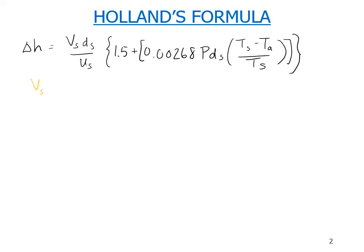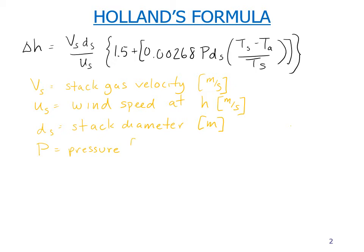Let's walk through these variables. V sub s is the stack gas velocity, in units of meters per second. u sub s is the wind velocity, or wind speed, at the top of the stack, height lowercase h, in meters per second. d sub s is the stack diameter, in meters. P is the pressure in units of millibars. T sub a and T sub s are the atmospheric and stack temperatures, and those need to be in units of kelvin.